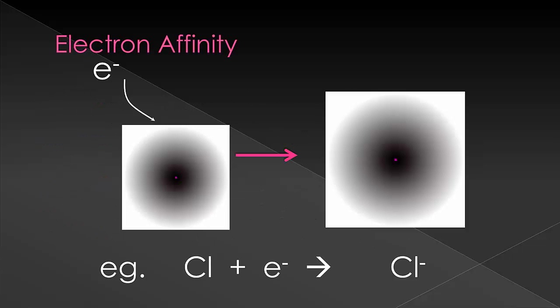So let's talk about electron affinity first. This is the tendency of an atom to gain an electron, thereby becoming an anion. So it's kind of the opposite of ionization energy. Where ionization energy, you're losing an electron. In this case, you're gaining an electron.